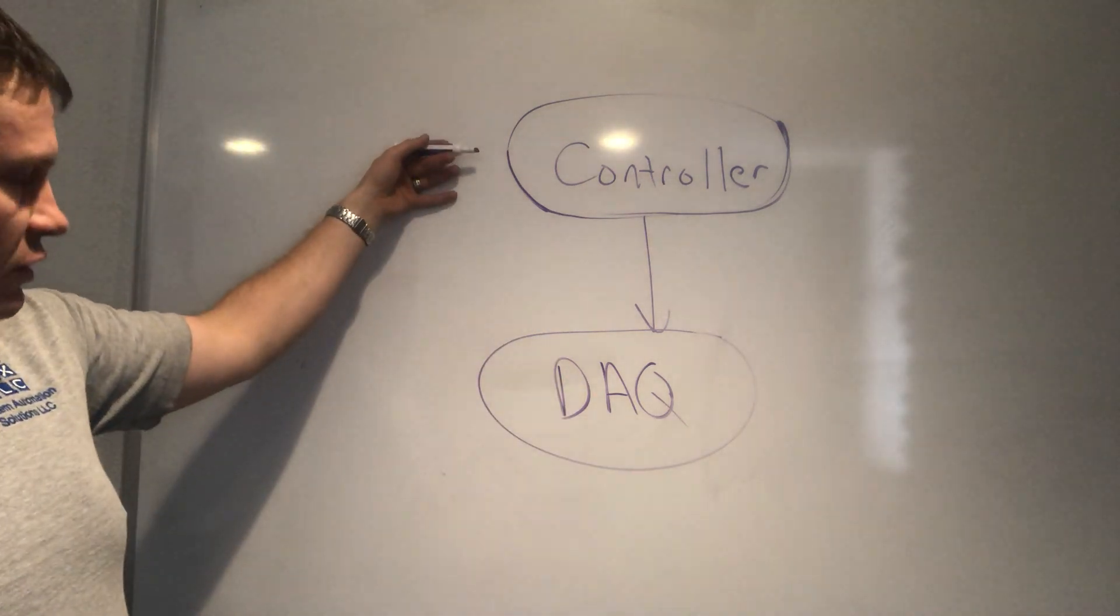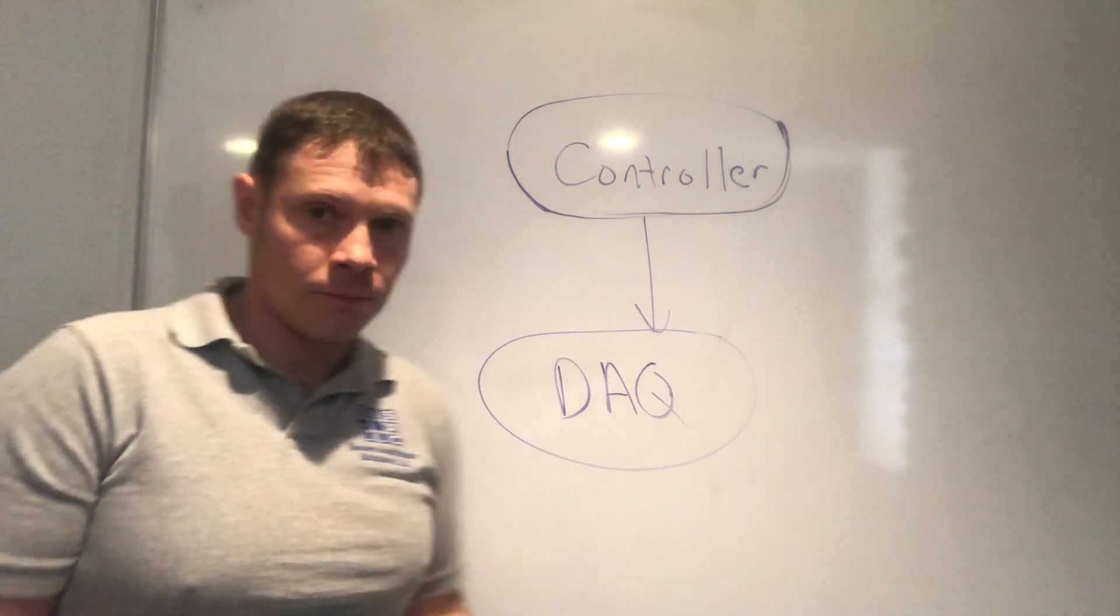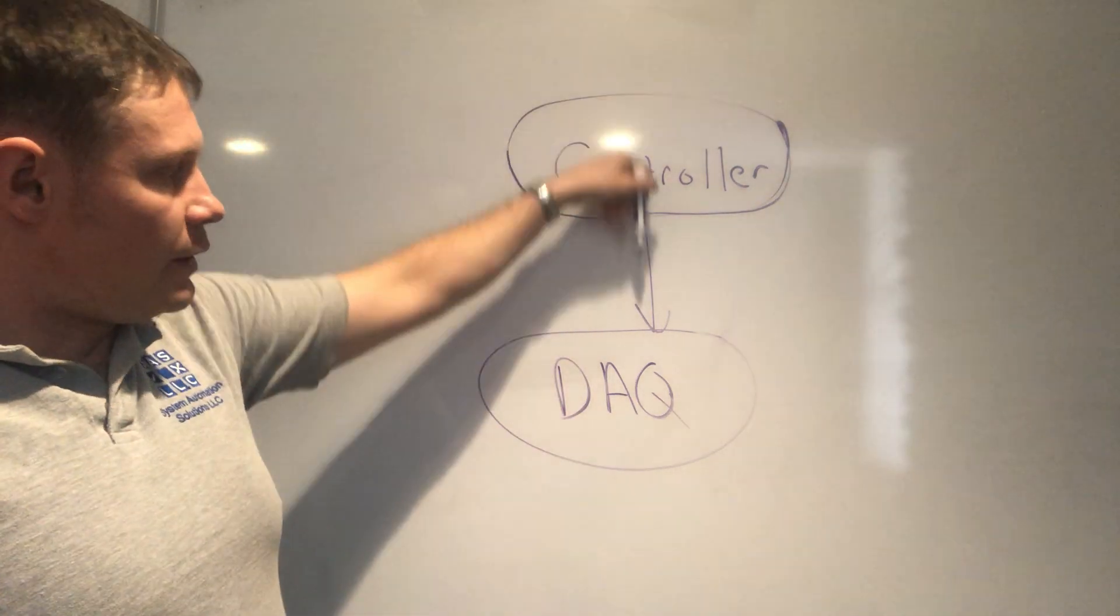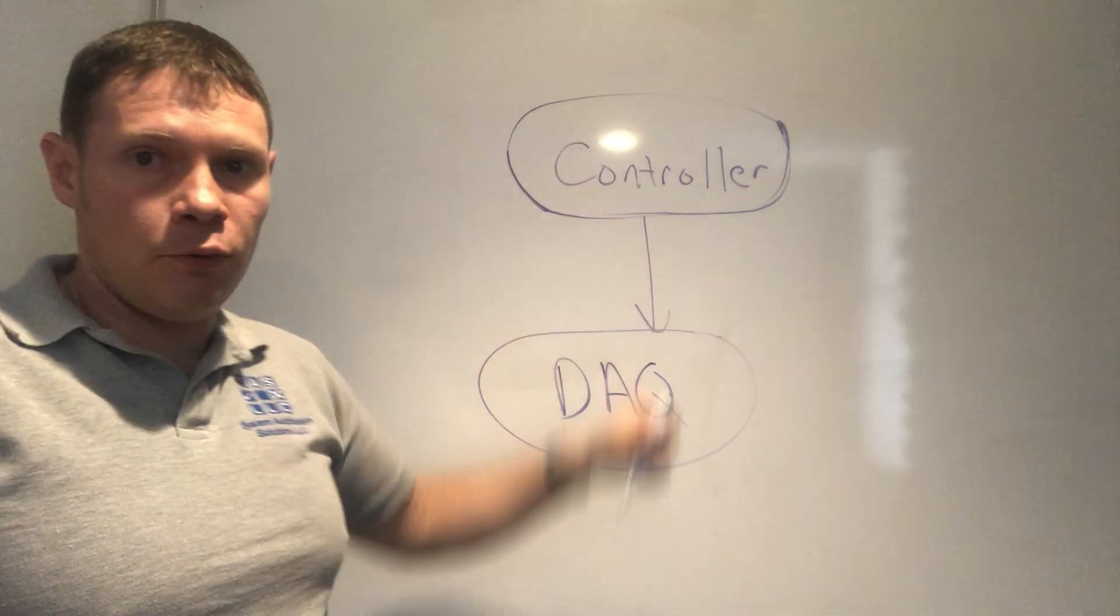So it would be reasonable for a controller to depend upon our DAC. And so we have the dependency arrow pointing from the controller to the DAC.